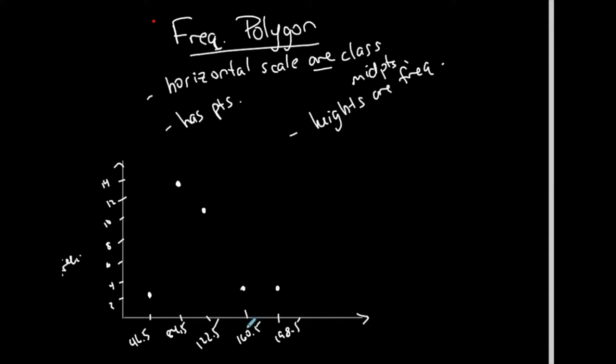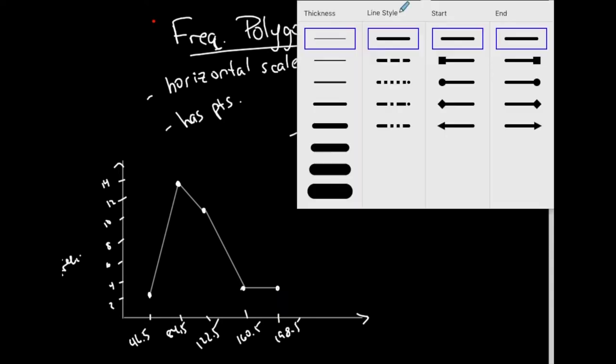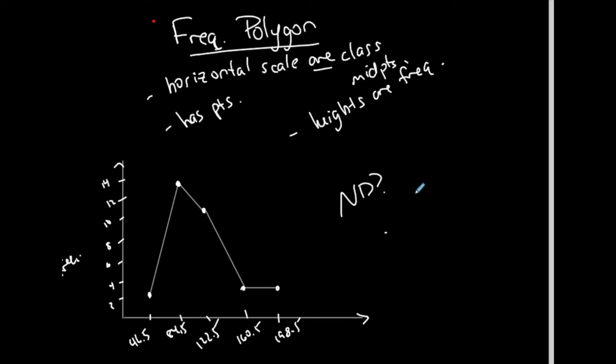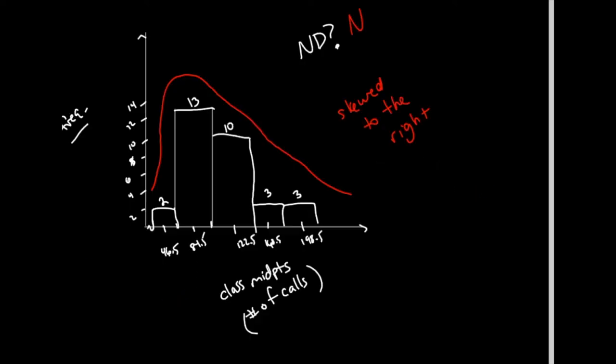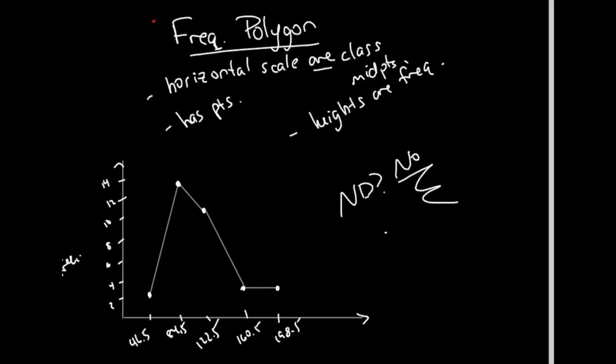And then after you do a frequency polygon, you go ahead and you connect the dots with straight lines. And then you can kind of see you can get a nice visual of what's going on in the graph. Is this normally distributed? It's not symmetric and bell shape, no. And it follows a similar kind of feel and visualization of this one, which would make sense because it's the same table. But this is a frequency polygon.